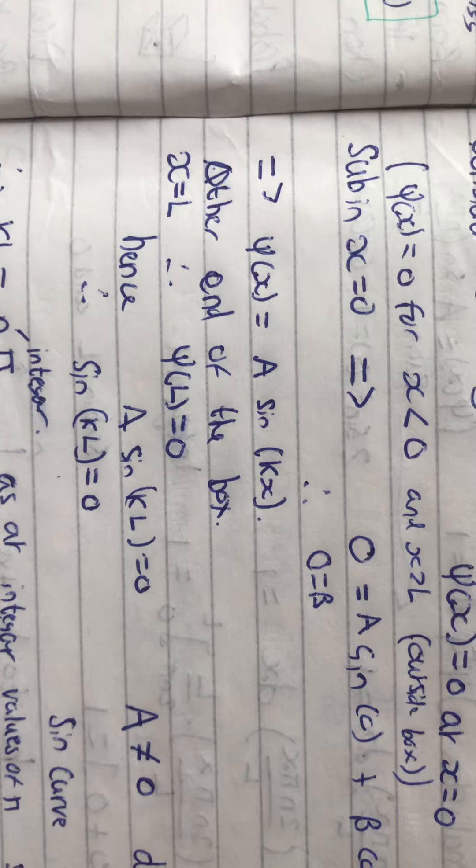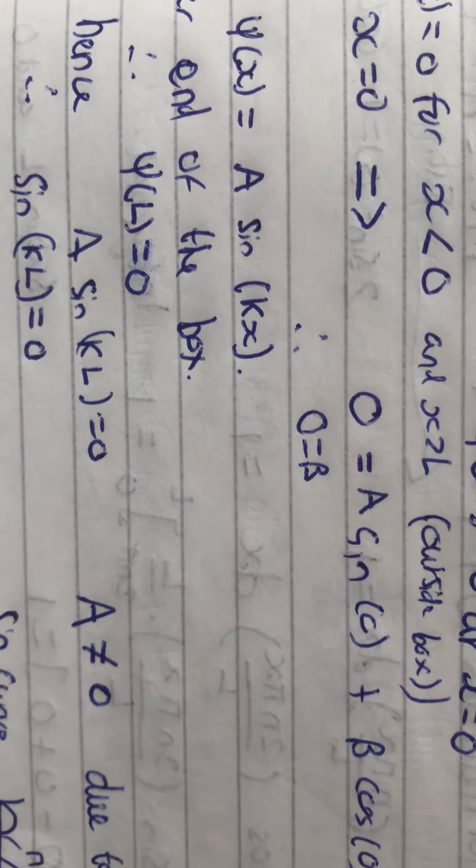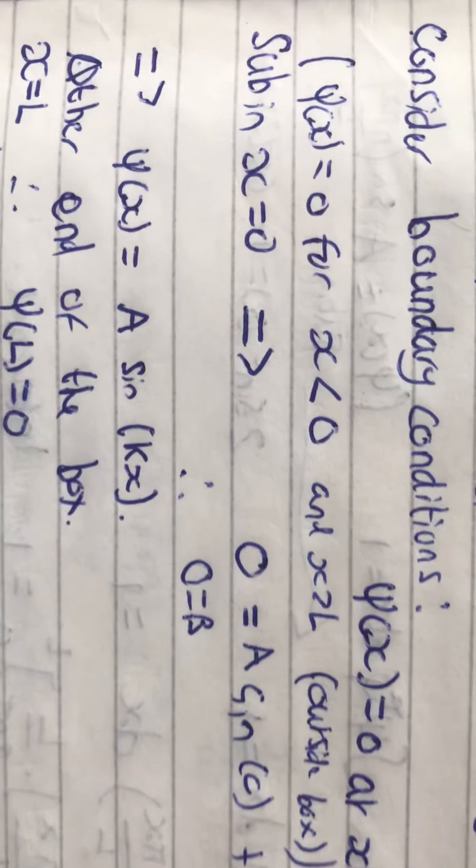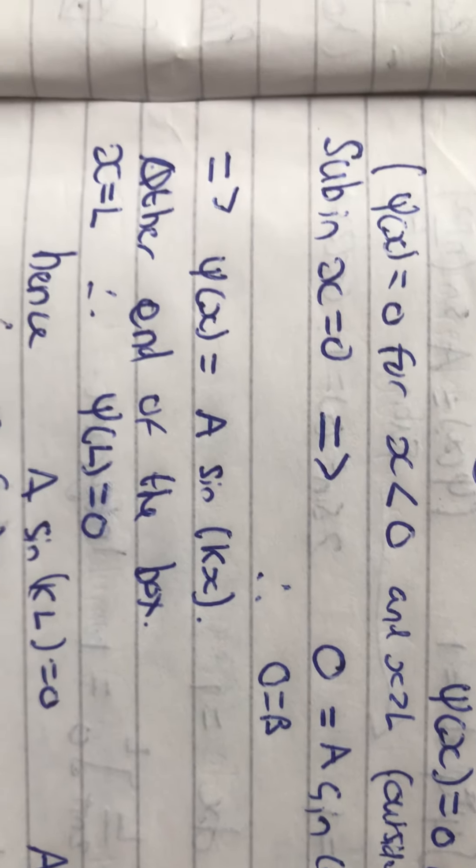If we look at the other end of the box, we've got x is equal to L. So, the wave function at L has to equal 0 as well, as what we described earlier. Because the walls have infinite potential and it's essentially the same as being outside the box.